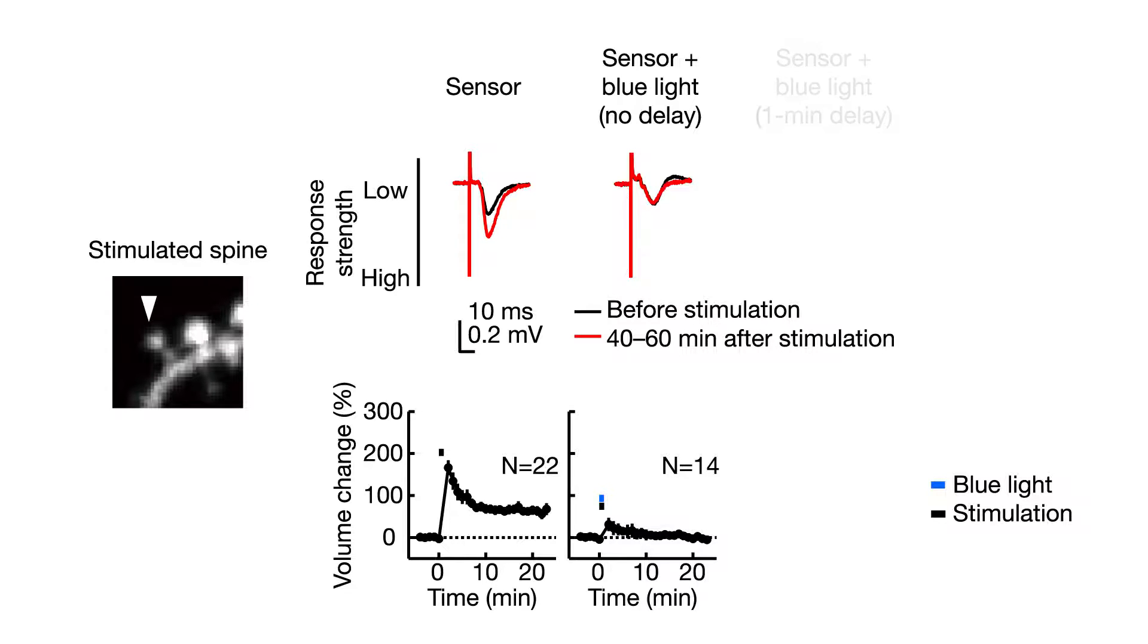When they turned the light on just one minute after stimulation, the synapse grew and the spine got stronger, as expected. These results indicate that memory-related changes in synapse strength and structure only require a short, one-minute burst of CAMK2 activity.